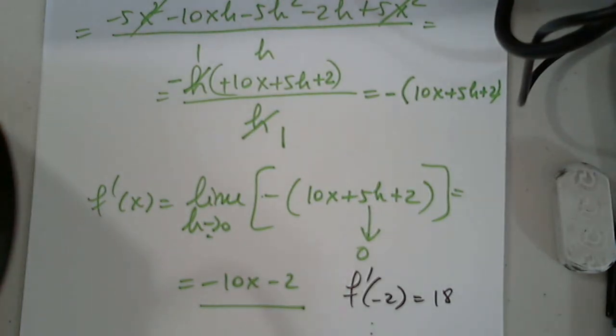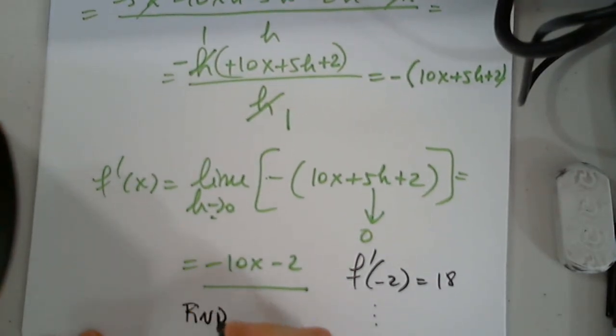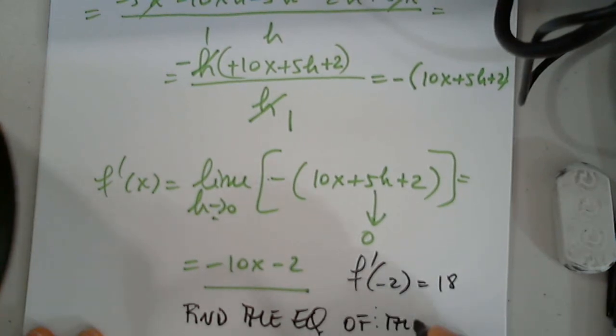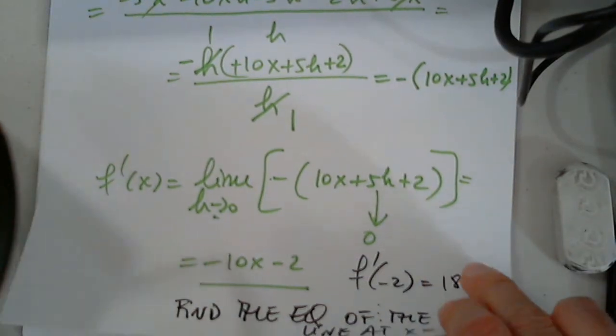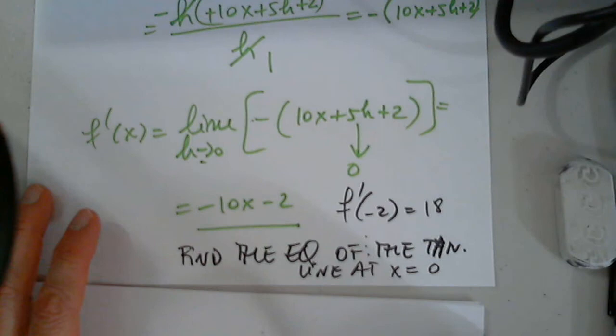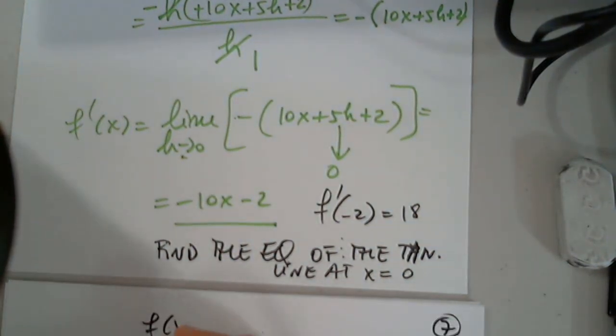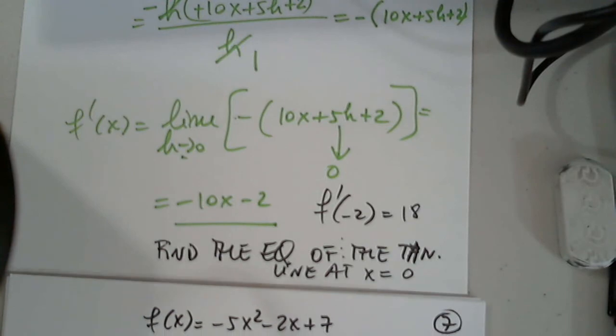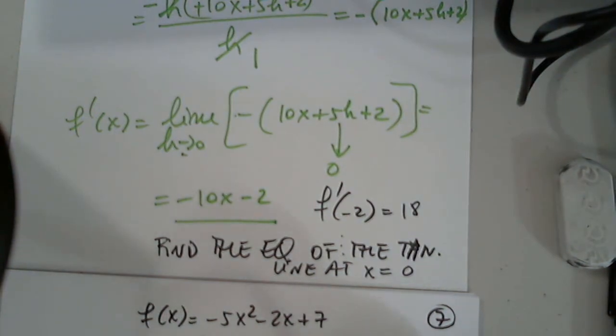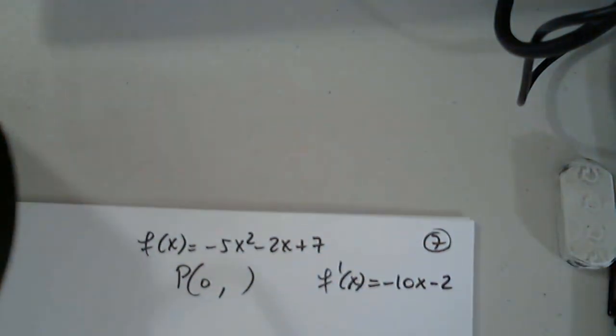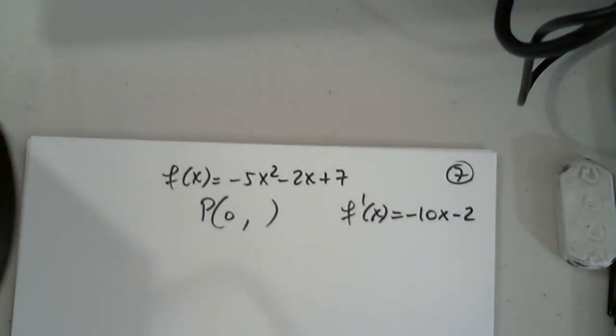What if for this function, I'm also asked, let's say, find the equation of the tangent line at x equals 0. How do I do that? How do I find the equation of the tangent line to the graph of this function at the point where x is 0?